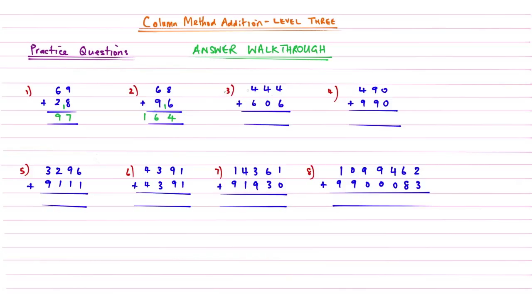Question 3: 4 add 6 gives me 10, remembering to carry the 1. Move on to the next column: 4 add nothing is 4, add the 1 gives me 5. And then 4 add 6 gives me 10, writing that 1 underneath the invisible column.